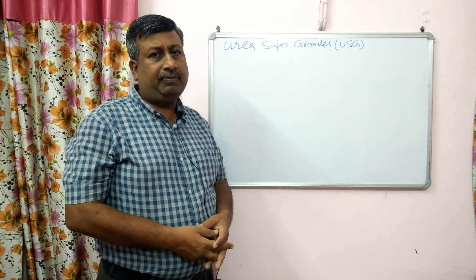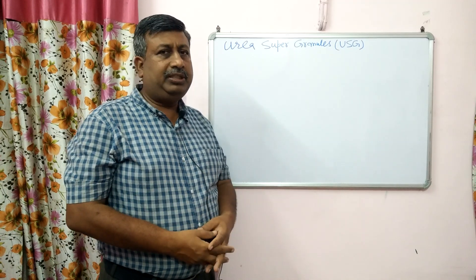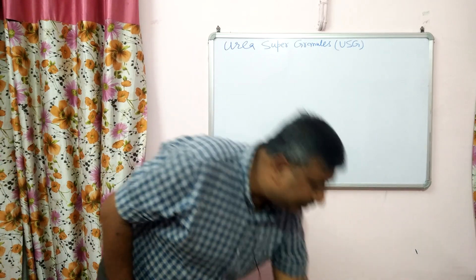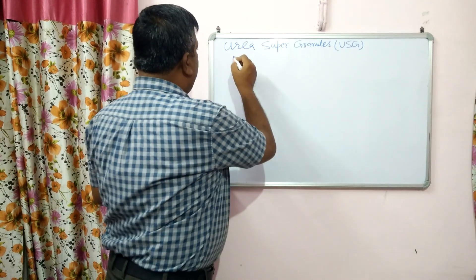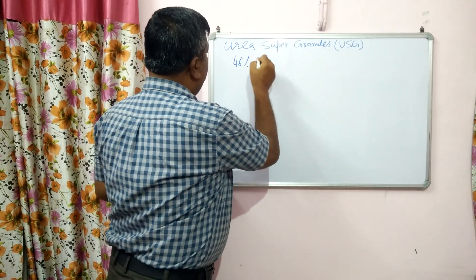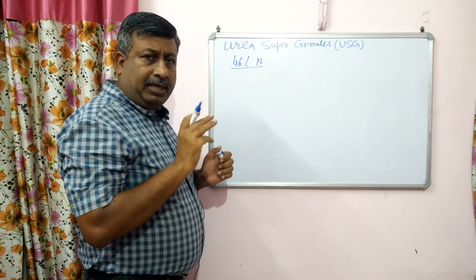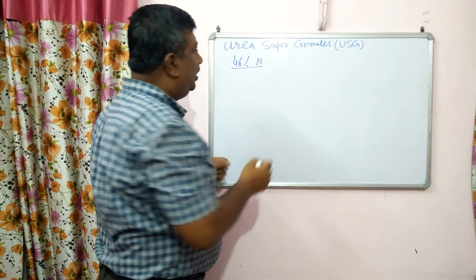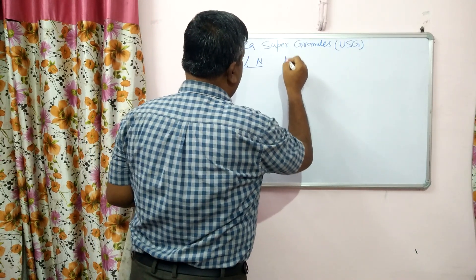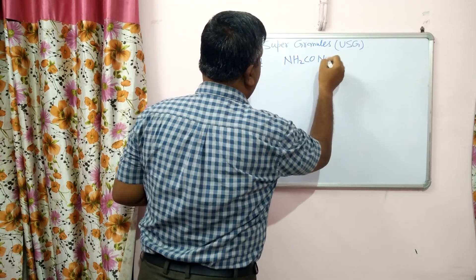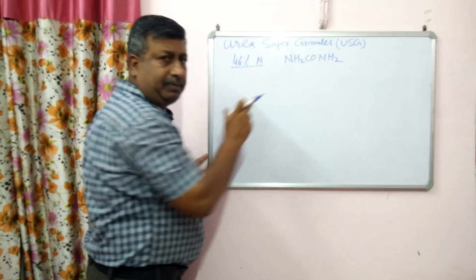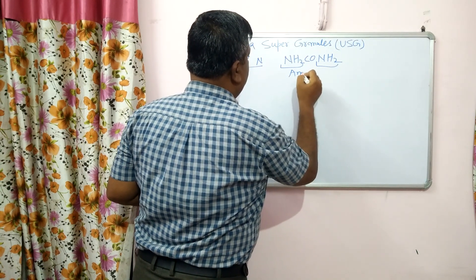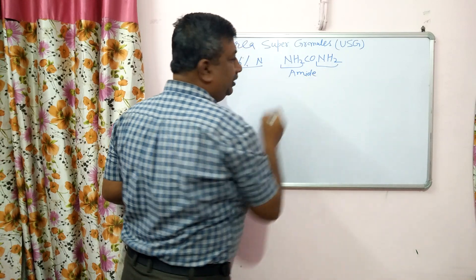Urea is a very popular fertilizer and it contains 46% nitrogen. It is the most common nitrogen fertilizer used. The formula is NH2-CO-NH2 and the nitrogen is present in amide form — this NH2 group is the amide.